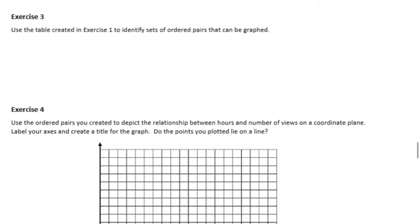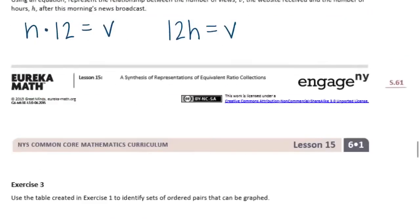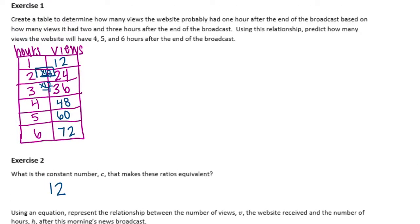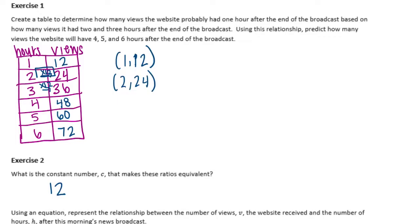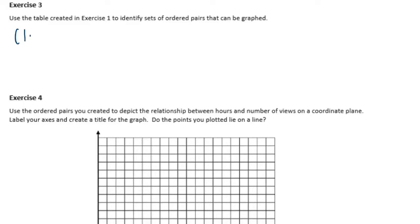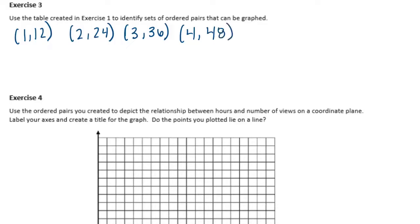Exercise 3: Use the table created in exercise 1 to identify sets of ordered pairs that can be graphed. We're going to create ordered pairs based on this chart. So our first one would be (1, 12), then (2, 24), and so on. Let's write those down: (1, 12), (2, 24), (3, 36), (4, 48), (5, 60), and (6, 72).